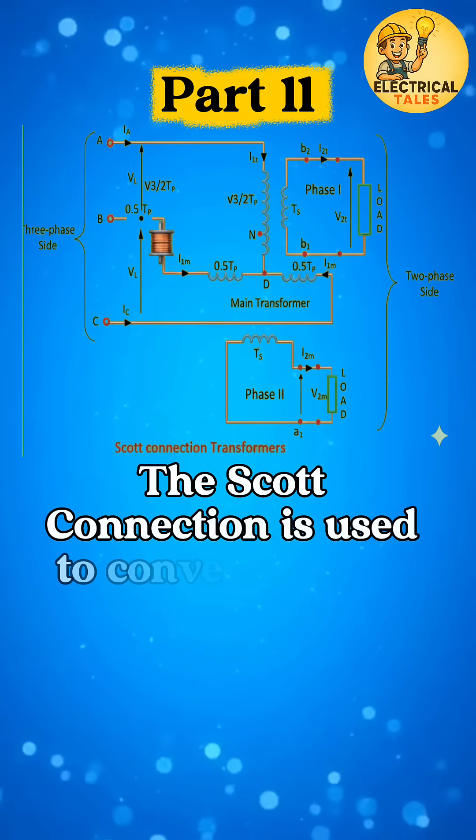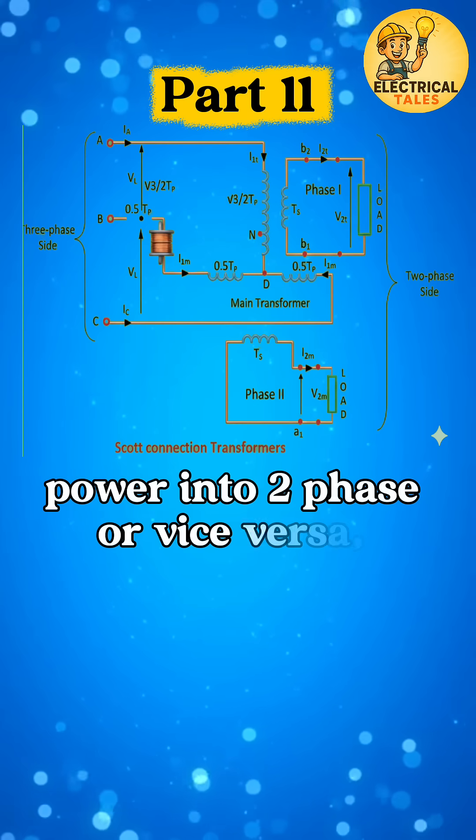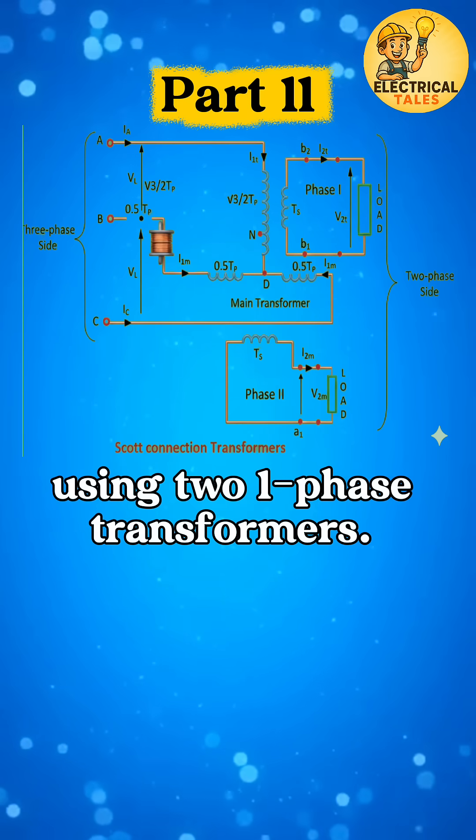The Scott Connection is used to convert three-phase power into two-phase, or vice versa, using two single-phase transformers.